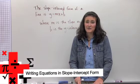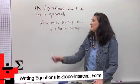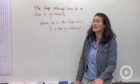The equations of lines have lots of different forms. One form you're going to see quite often is called the slope-intercept form, and it looks like this.